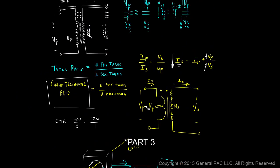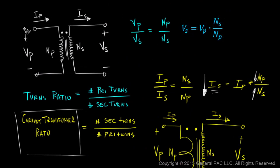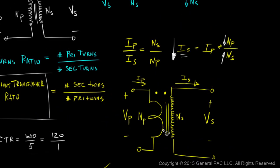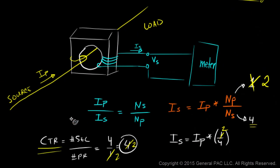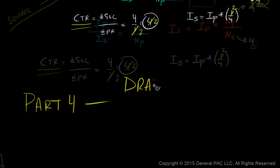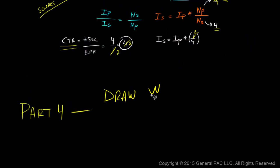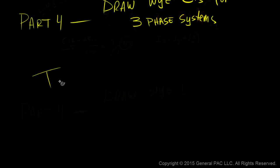In part 3, we talked about an ideal transformer, primary current, the number of primary and secondary turns, and what turns ratio means. We also discussed current transformer ratio and drew a better representation of what CTs look like. We did an example solving secondary current based on the number of turns. In part 4, we will draw wye-connected current transformers for three-phase systems.